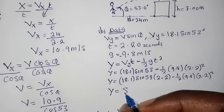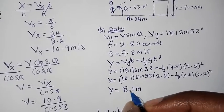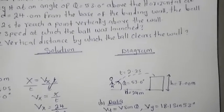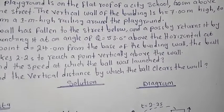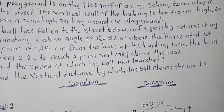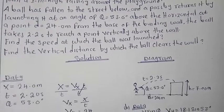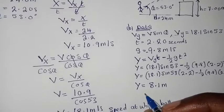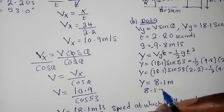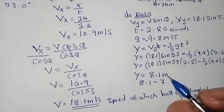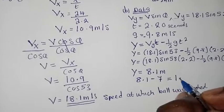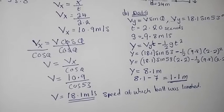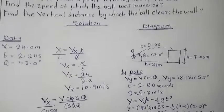Calculating this, we get approximately 8.1 meters. But this is not the final answer, because the vertical wall of the building is 7 meters high and we want the distance by which the ball cleared the wall. So we calculate 8.1 minus 7, and we get an answer of 1.1 meters. This is the distance by which the ball cleared the wall.